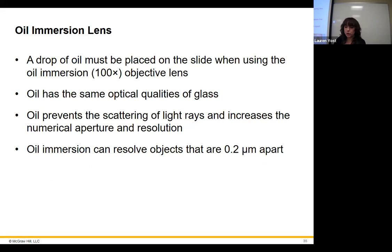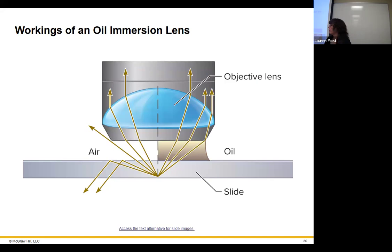We use immersion oil to reduce scattering of light rays caused by the difference between glass and air. Oil is much more similar to glass, so it minimizes that difference, keeping light rays on track through the lens and producing a much clearer image.